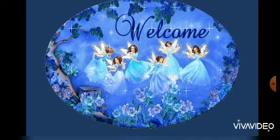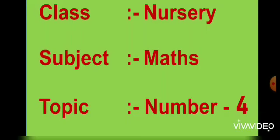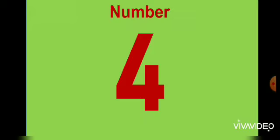Today we will be doing number 4. This is number 4. Now learn how to write number 4. First make a slanting line, then a slipping line, and then a standing line, and our number 4 is ready.